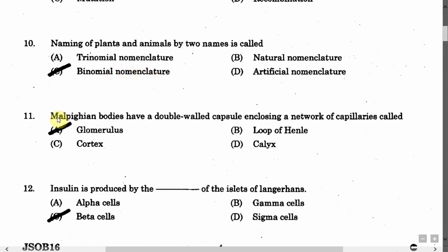The next question is: Malpighian bodies have a double wall capsule enclosing a network of capillaries called — Option A: Glomerulus. Option B: Loop of Henle. Option C: Cortex. Option D: Calyx. The correct answer is Option A, that is glomerulus.